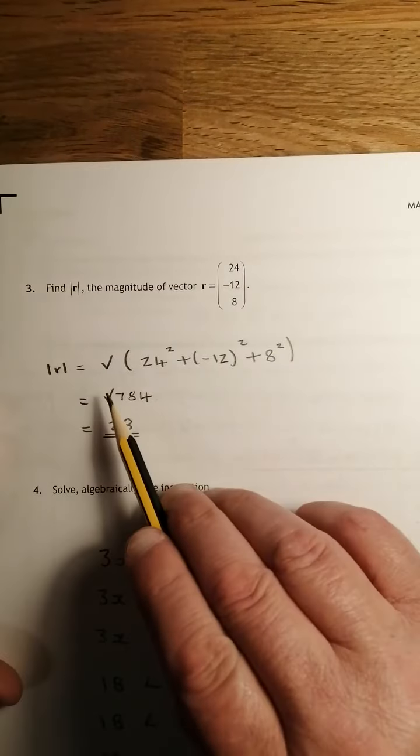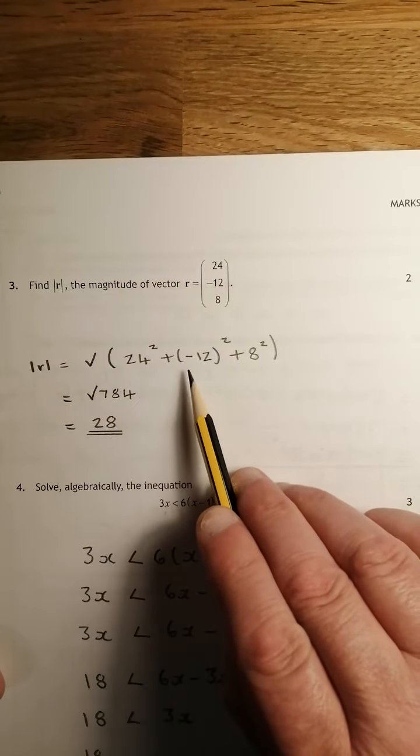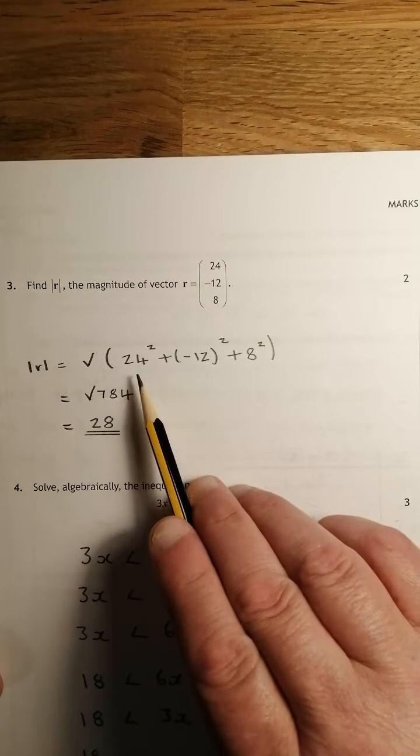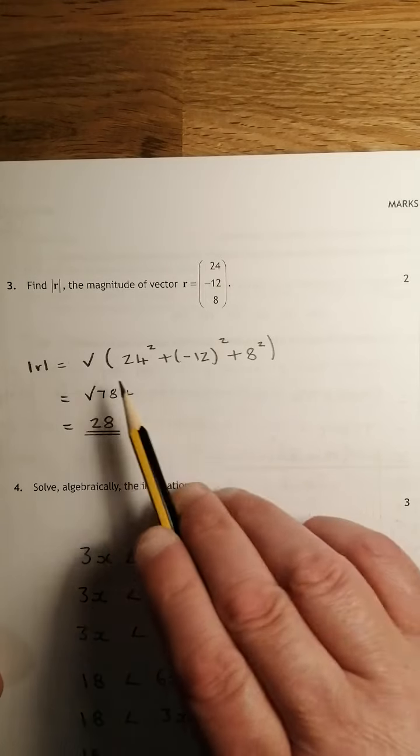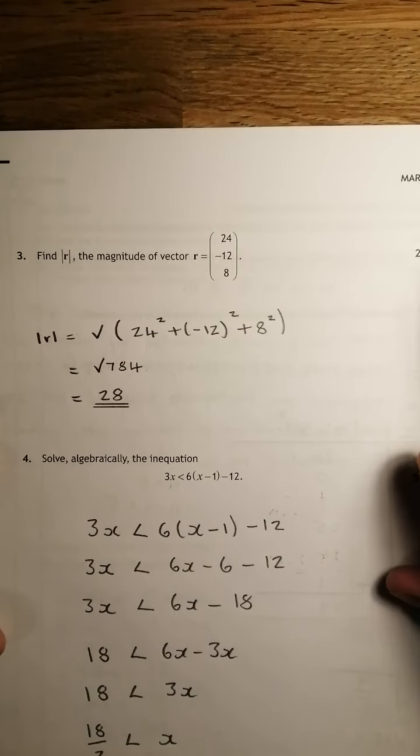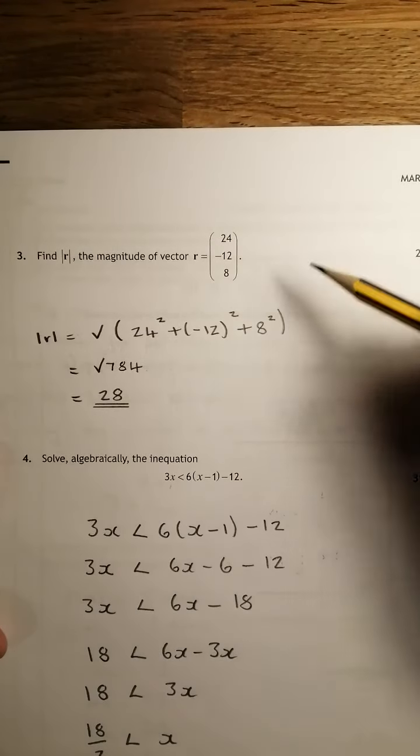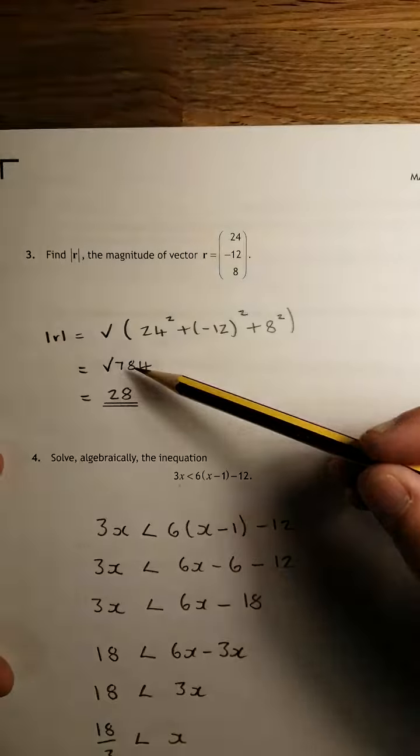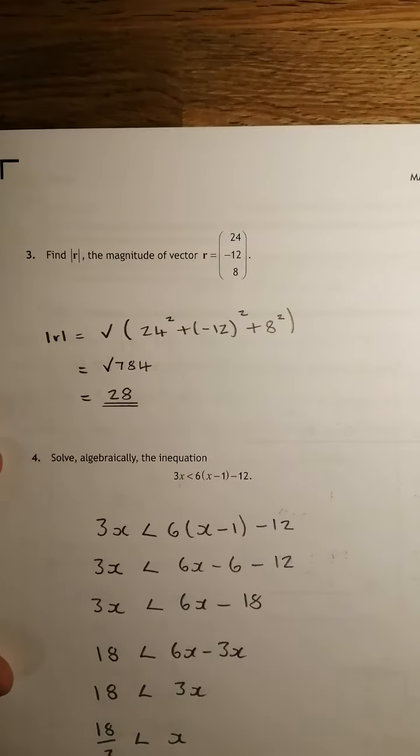Well, to get the length of a vector, you take each of the components, you square them, then you add them together, and then you square root your final answer. 24 squared plus minus 12 squared plus 8 squared ends up being 784. The square root of that is 28.